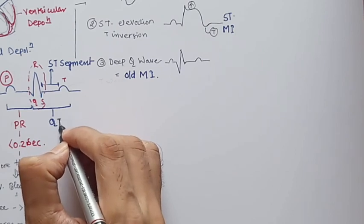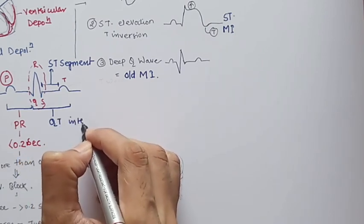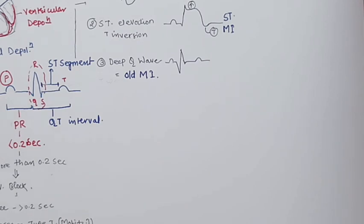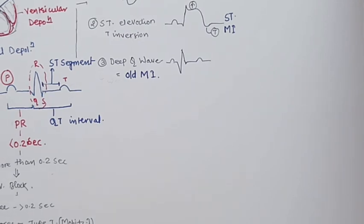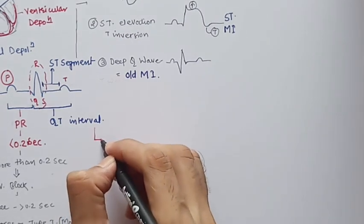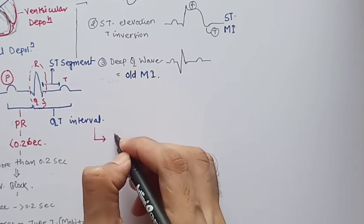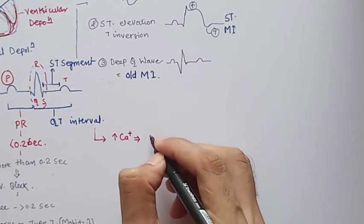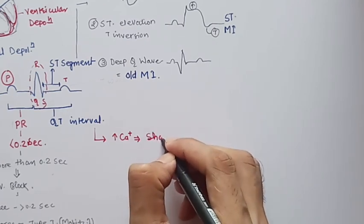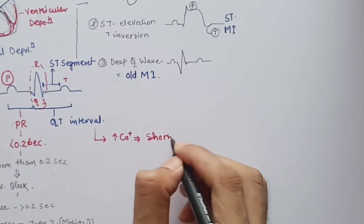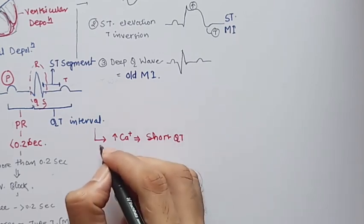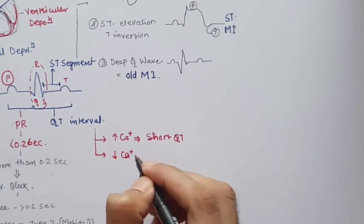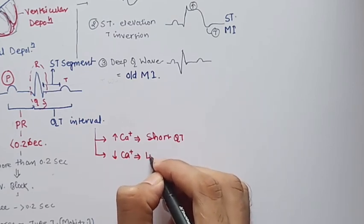The QT interval runs from the start of the Q wave to the end of the T wave. QT interval is related to calcium levels. If calcium level is high — hypercalcemia — we have a shorter QT interval. Similarly, if there is hypocalcemia, the QT interval will be longer.